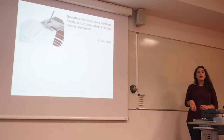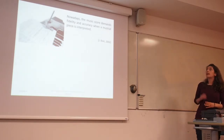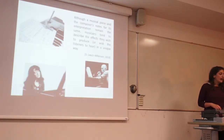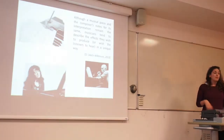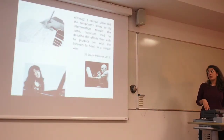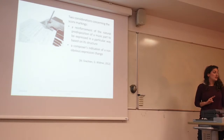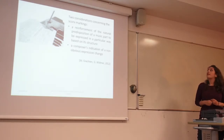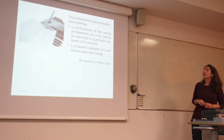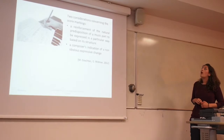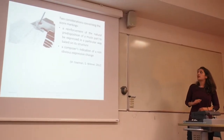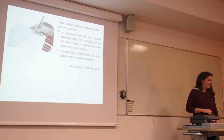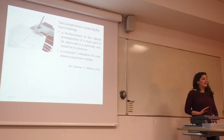We know that nowadays the music score demands fidelity and accuracy when a musical piece is interpreted. Although a musical piece and a composer's notes for its interpretation remain the same, musicians tend to describe the effects they wish to produce in a unique way. There are two main considerations concerning the score markings, talking about classical music notation.